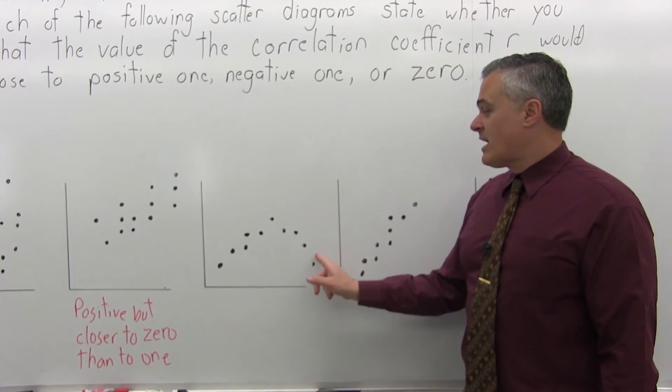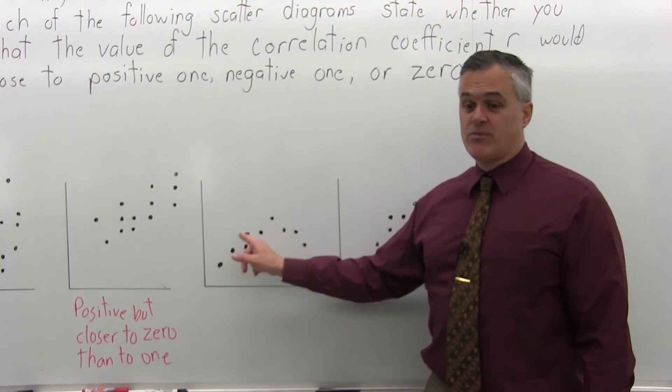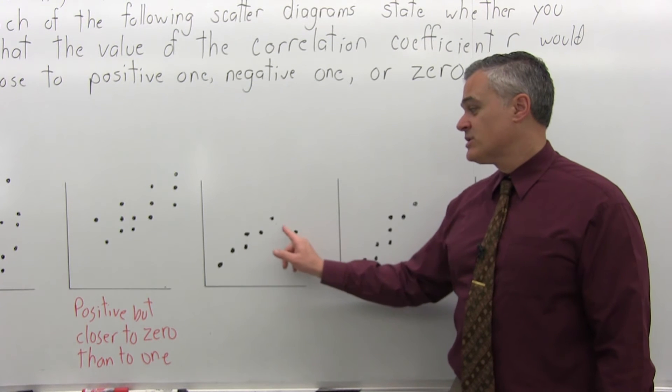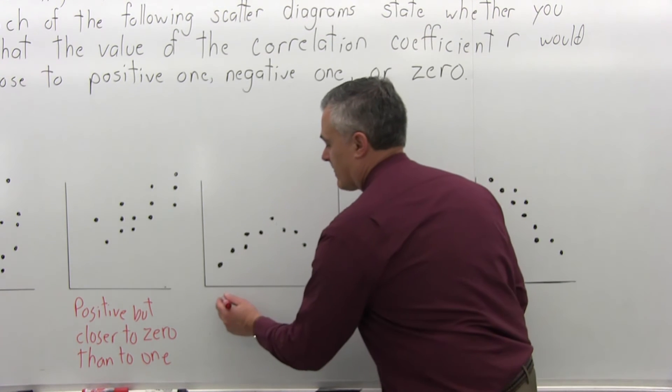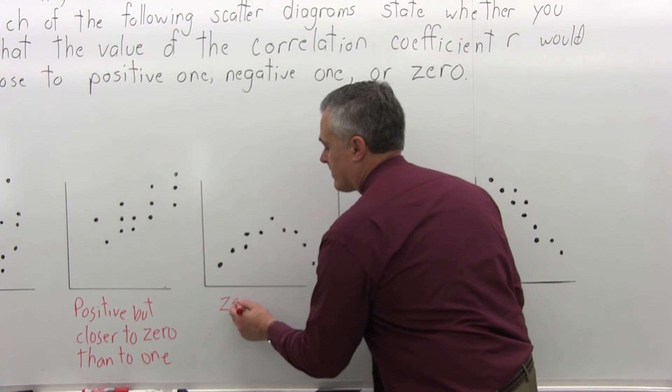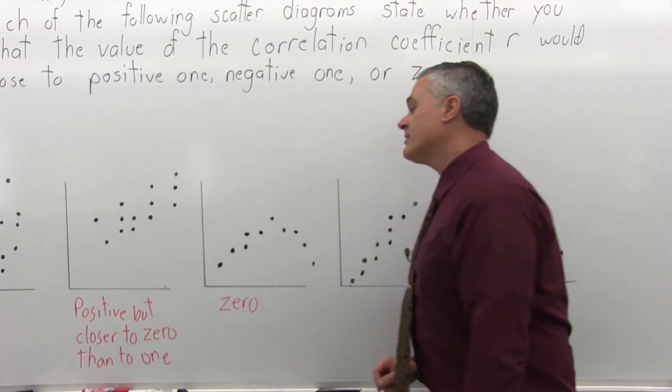The next scatter diagram, there is a relationship, but it's not linear. There is a curve. So for the middle one, I'm going to say 0.